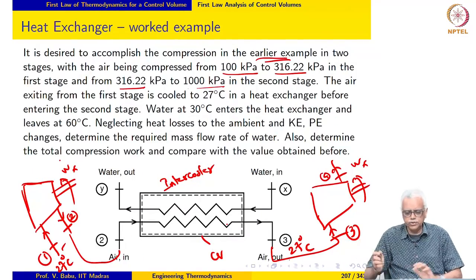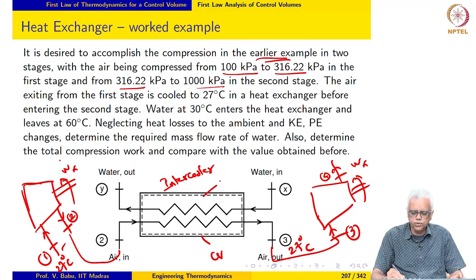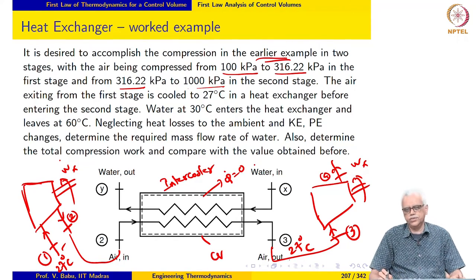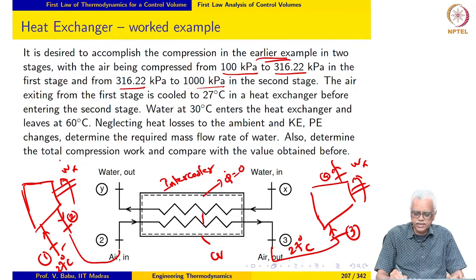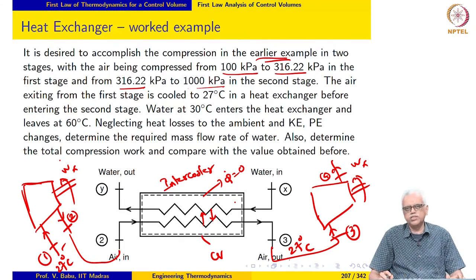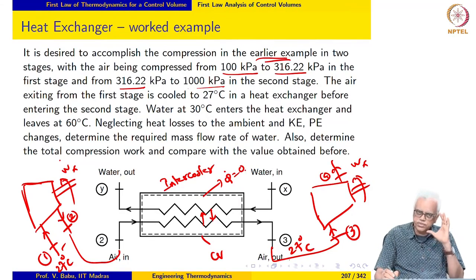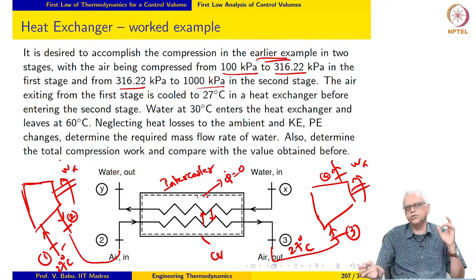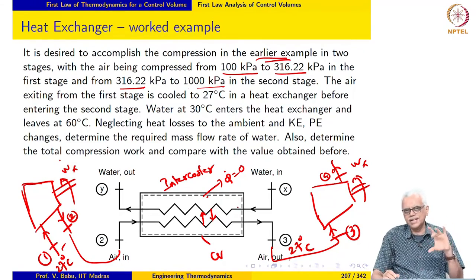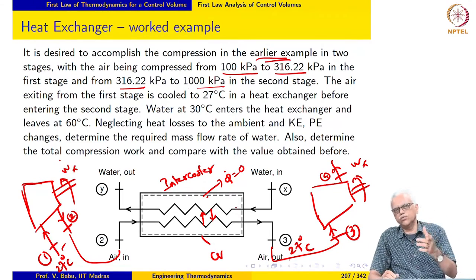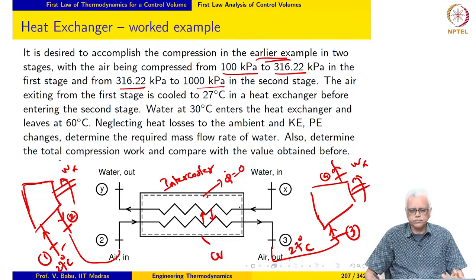One important aspect to notice is that we are saying Q-dot from the heat exchanger is 0. However, there is enthalpy transfer taking place between the streams. Our control volume encloses both streams, so the Q-dot we set equal to 0 is actually heat loss from the heat exchanger to the surroundings. Whatever happens inside the control volume is accounted for through the enthalpy change in the two streams.